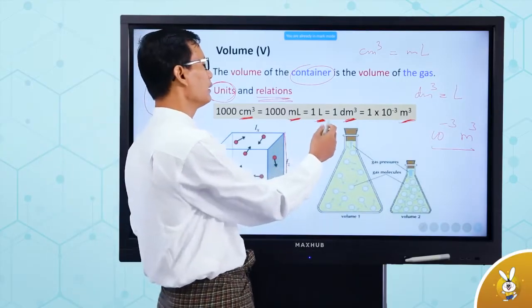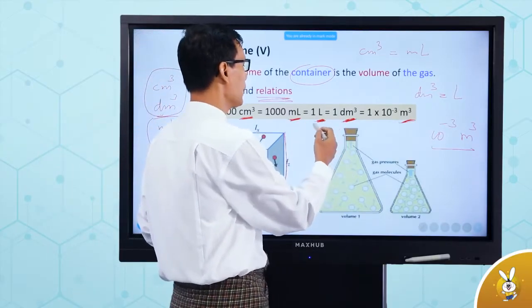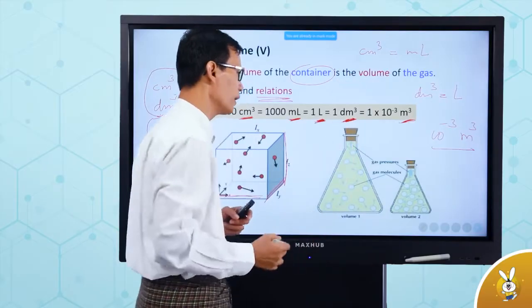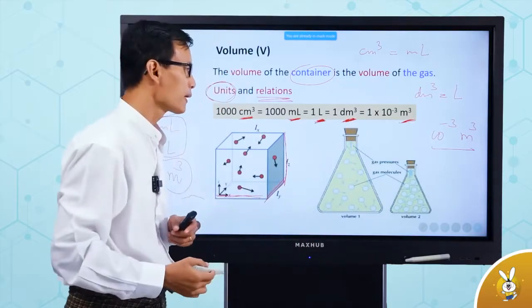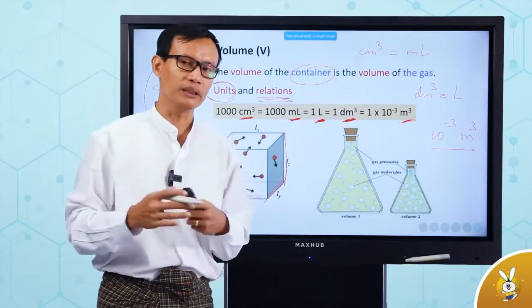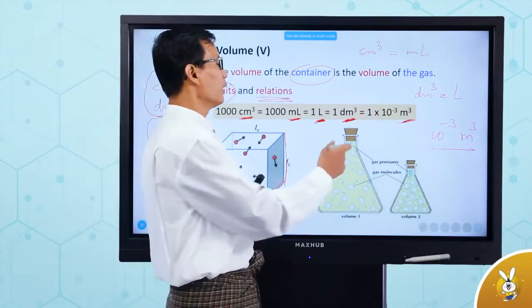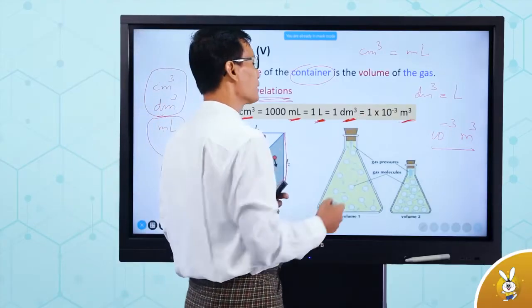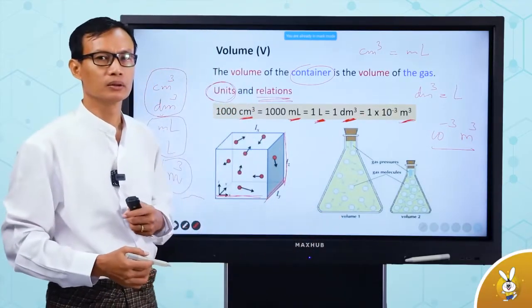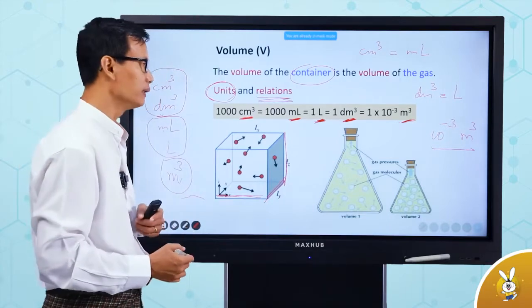One liter — DM³ is one DM³, one liter. DM³ is one DM³. If you are 10 to the power of minus 3, 10 to the power of minus 3.